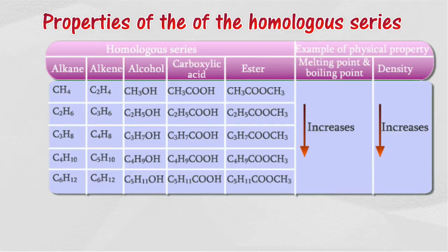When going down a homologous series, its physical properties change gradually following a similar sequence. For example, melting point, boiling point, and physical state change gradually when going down the same homologous series.